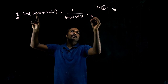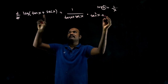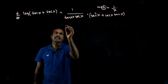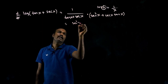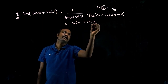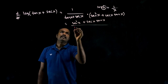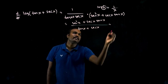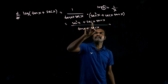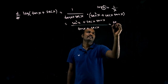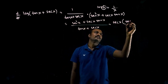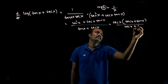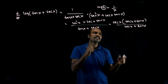In the numerator we have secant squared x plus secant x tan x, divided by something. We can take secant x common, giving secant x times (secant x plus tan x). After cancellation, the answer is secant x.